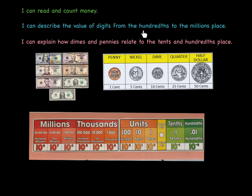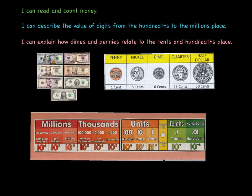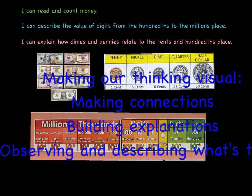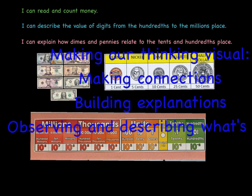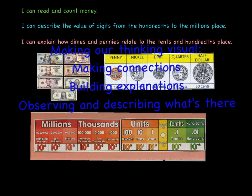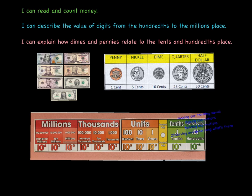Next, we want to describe the value of digits from the hundreds to the millions place using this place value chart. One thing to remember is making our thinking visible — making connections to what we already know, to situations we've been in, movies, books, and other lessons. We want to build explanations so we can teach this to somebody, write it down, and observe and describe what's there using good describing words.